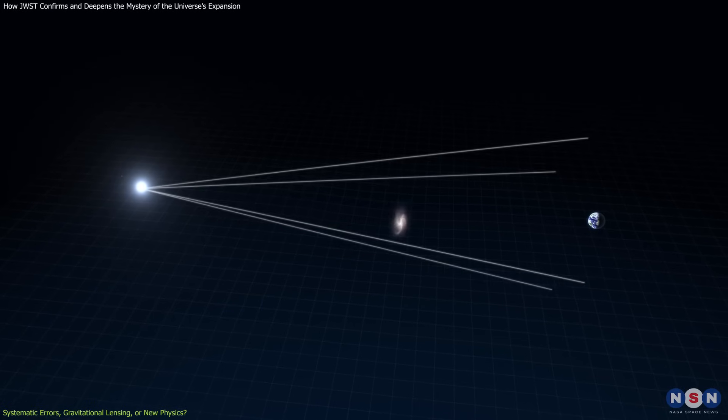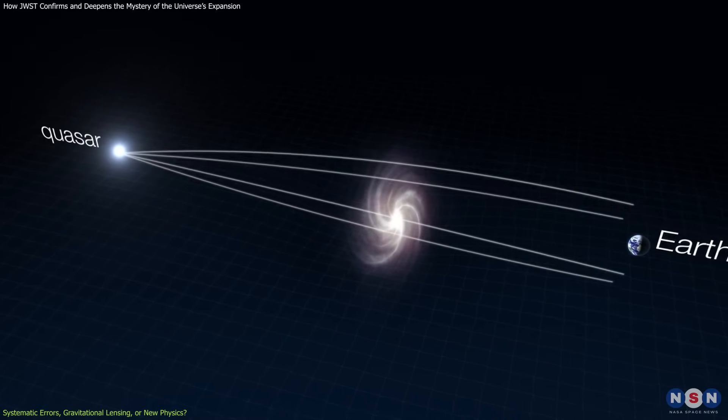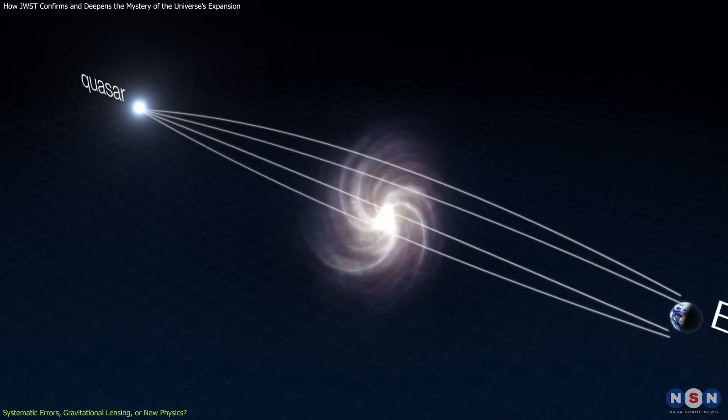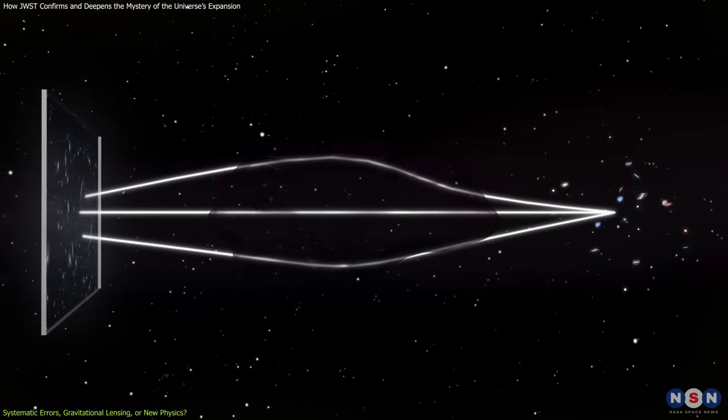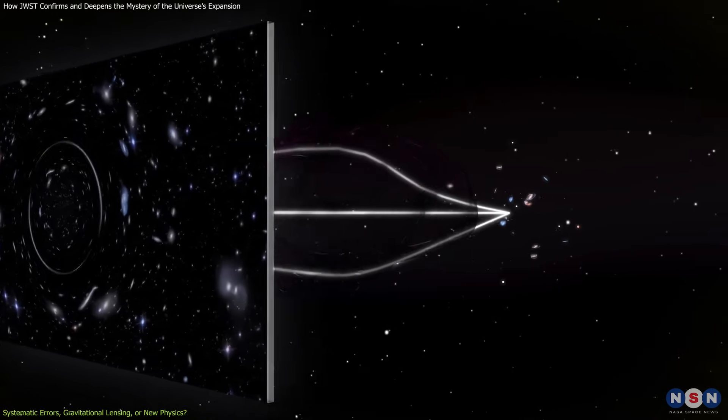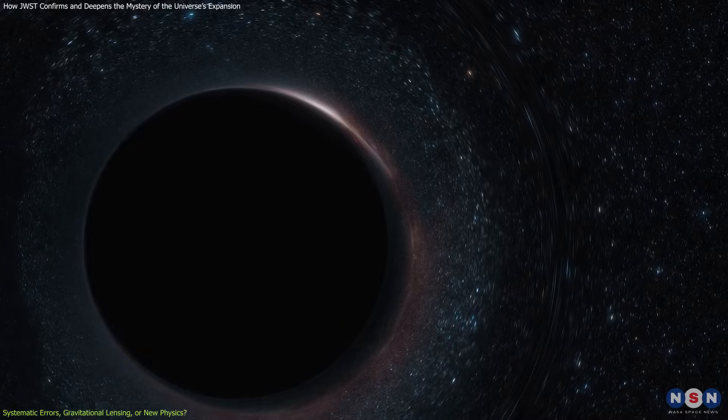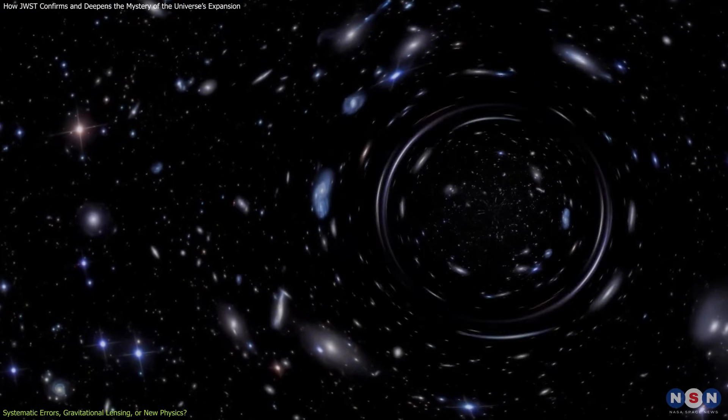Gravitational lensing is when light from a distant object is bent by the gravity of an intervening object, making it appear brighter or larger than it really is. Another possibility is that there are unknown sources of gravitational lensing that affect our measurements of distances. For example, maybe there are clumps of dark matter or black holes along our line of sight that distort our view of distant galaxies.